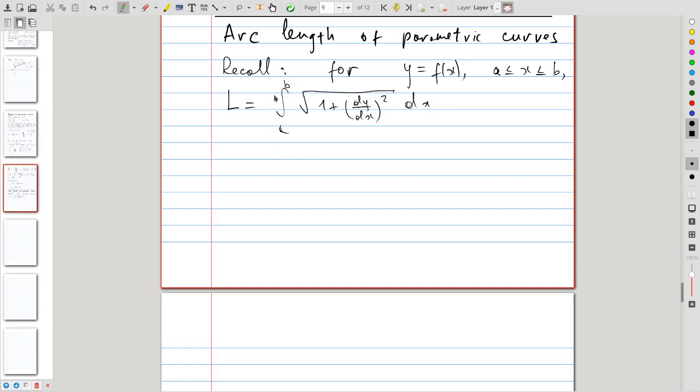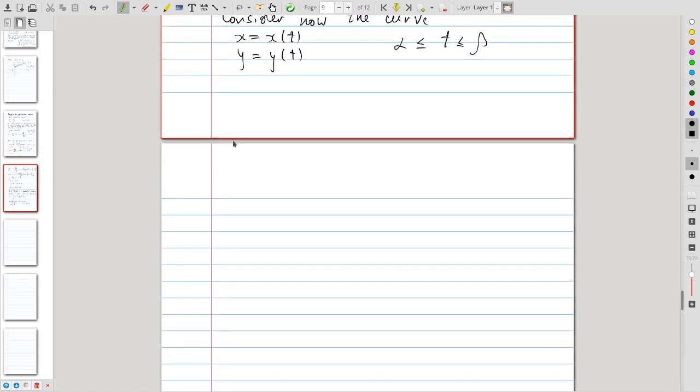For a parametric curve, it turns out you get a very similar formula. So, consider now the curve x equals x(t), y equals y(t) with t between alpha and beta. So then, for this curve,